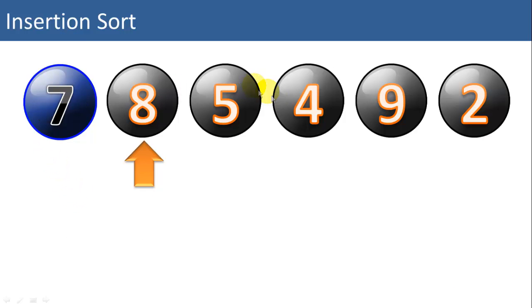So we're going to start with a list of integers. We're going to start with a single item in our sorted list on the left, and one by one we're going to work through the unsorted list and move each item into its correct position. Here we know the 7 is already sorted if there's only one item in the list we're looking at.